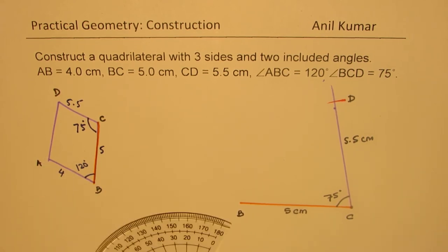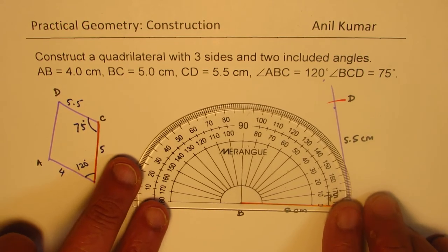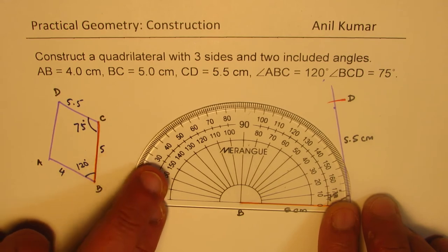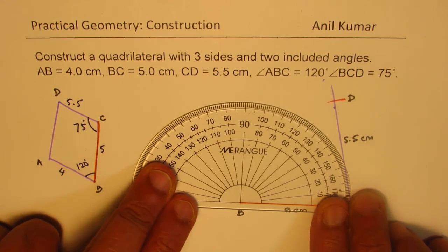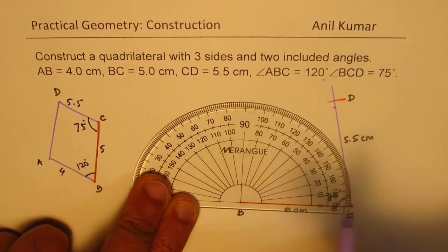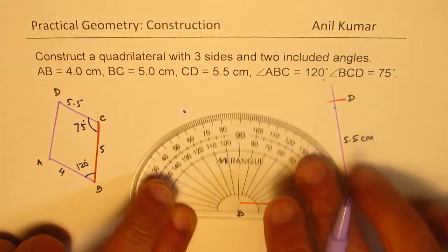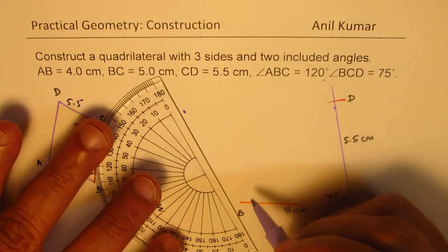From B, we have to sketch. We are not constructing angles, we are just getting the angles with the protractor in this case. 120 degrees, 90 and that goes 120 degrees. So that is the line.